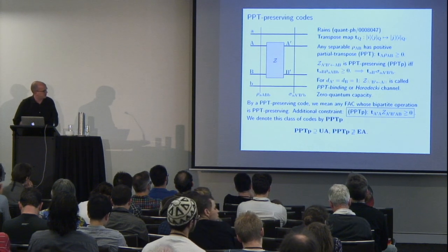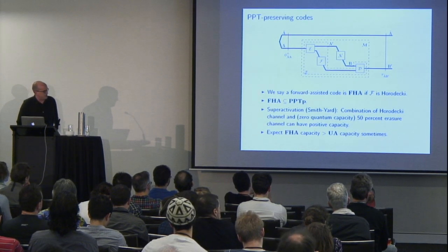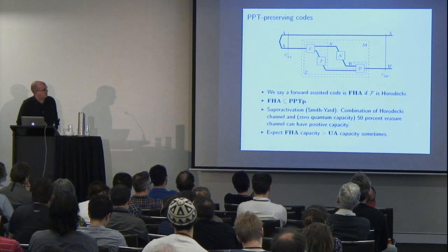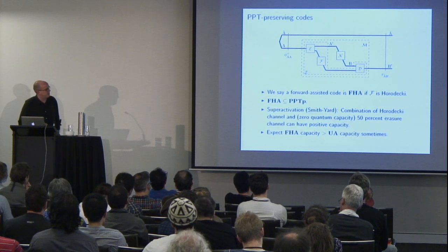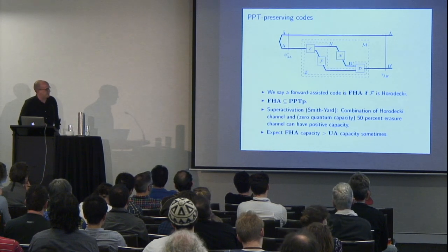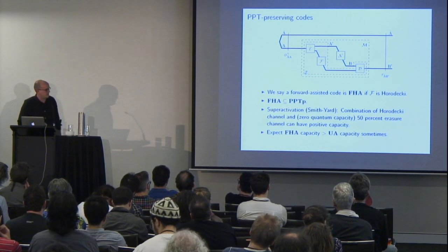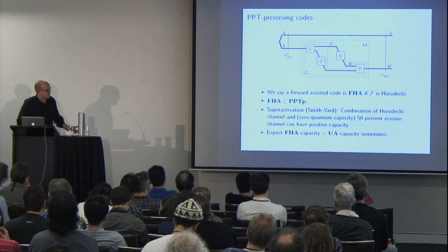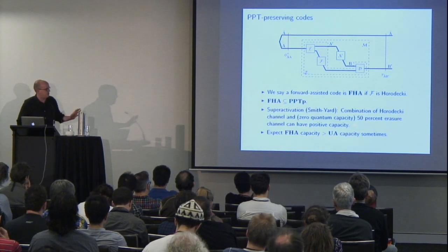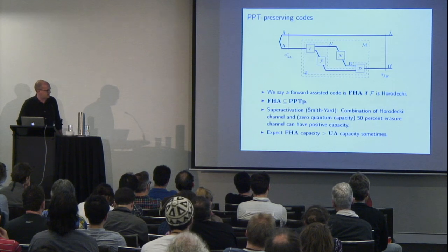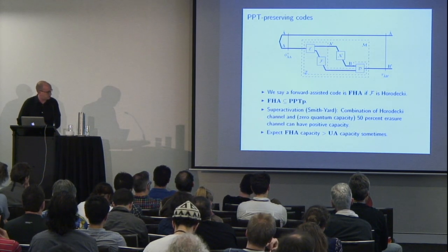PPTP contains unassisted codes but not entanglement-assisted codes. One more class that fits inside PPT-preserving codes is forward-assistance by Horodecki channels — if you have a forward-assisted code where F is one of these Horodecki or PPT-binding channels, it fits into the PPT-preserving class. This already tells us that this class will sometimes have better asymptotic capacity than unassisted codes, because from the superactivation result of Smith and Yard, a combination of Horodecki channels and a 50% erasure channel — both with zero quantum capacity — can have positive capacity.